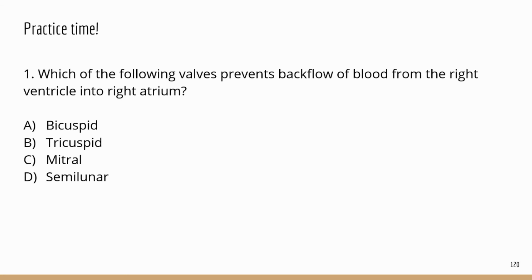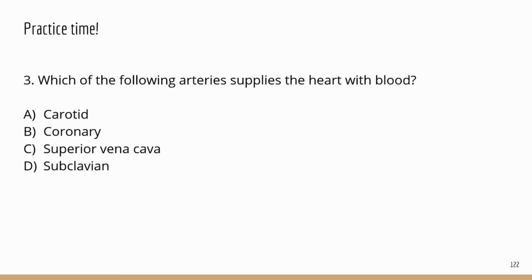Now let's look at some practice problems. Number one: which valve prevents backflow of blood from the right ventricle into the right atrium? The answer is the tricuspid valve — it's on the right side between the atrium and the ventricle. The bicuspid or mitral valve is the same valve but on the left side, between the left atrium and the left ventricle. Number three: which arteries supply blood to the heart? That would be the coronary arteries — the right coronary artery and the left coronary artery.